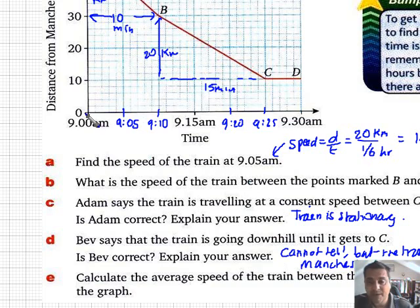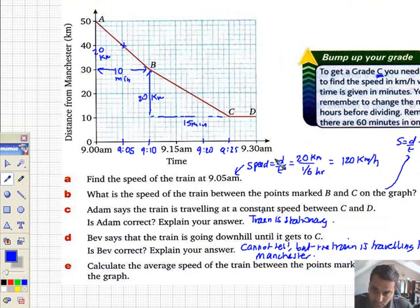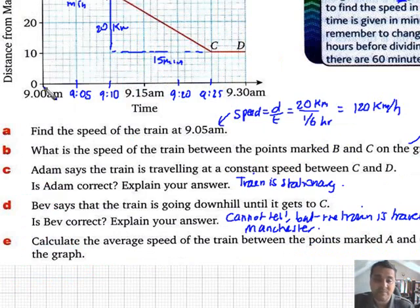But the train is traveling towards Manchester. So, it gives the impression that it's coming downhill. It's not. Rather than being a graph that goes away from somewhere, here we're coming towards somewhere.